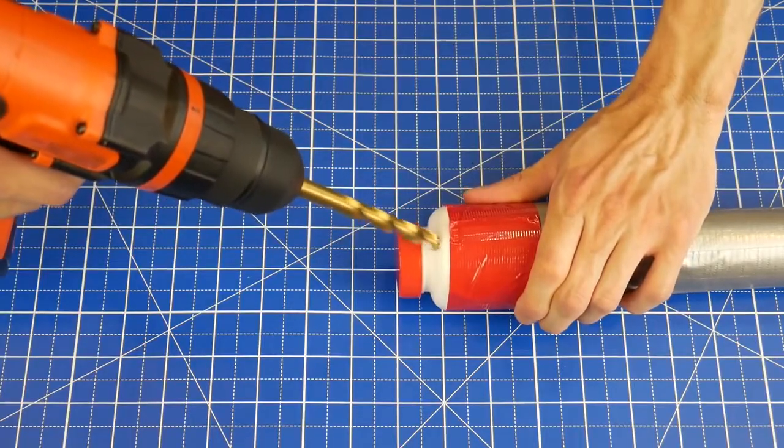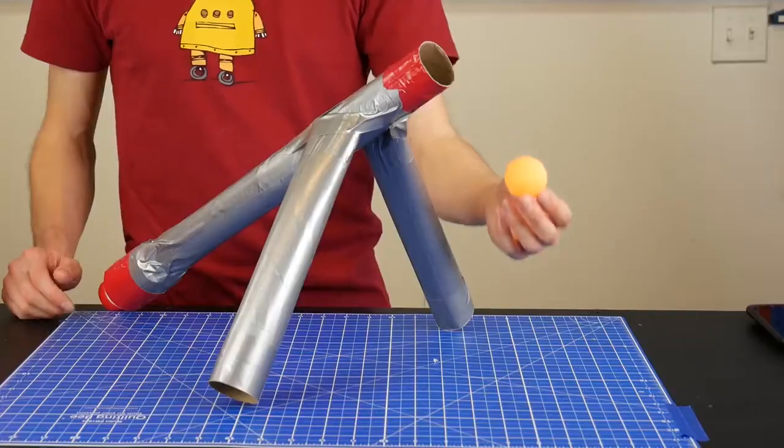Using a drill bit that's about the same size as your barbecue lighter, drill a hole into the plastic bottle. Okay, we're ready to fire.